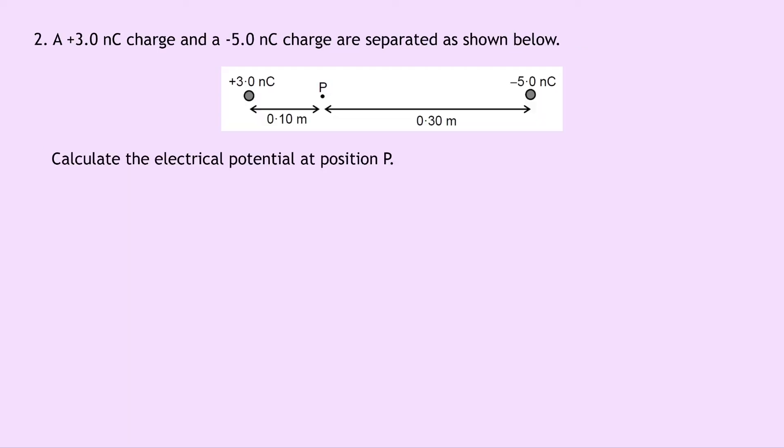Question two says that a 3 nanocoulomb charge and a minus 5 nanocoulomb charge are separated as shown below. Calculate the electrical potential at position P. We'll notice that the position P is in between the two charges and they're at different distances away. So what we need to do here is find the electrical potential at P due to charges Q1 and Q2 separately, and then add them together in a scalar sum. So let's start by labeling our two charges. So I'm going to call this one Q1 and this one Q2.